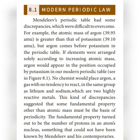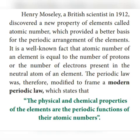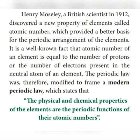Later, a British scientist Henry Moseley discovered in the year 1912 a new property of elements called atomic number. Atomic number of an element is equal to the number of protons or the number of electrons present in the neutral atom of an element. Based on this, modern periodic law was framed: the physical and chemical properties of the elements are periodic functions of their atomic number, which means repetition based on atomic number. Elements are arranged in the periodic table based on atomic number only.